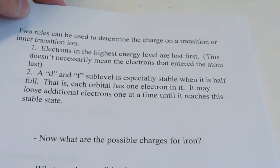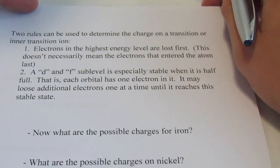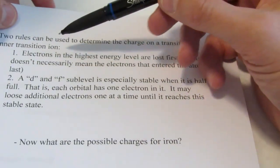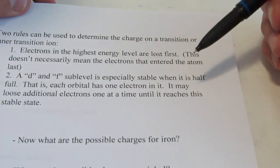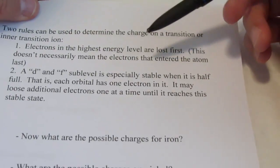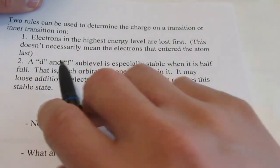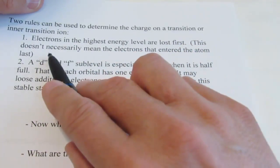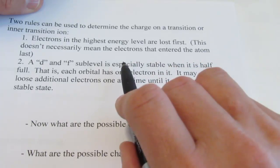Let me give you two rules. Two rules can be used to determine the charge on a transition or inner transition ion. Rule number one is the first one we use: electrons on the highest energy level are lost first, and they lose those both at the same time. Now when I say the highest energy level, this doesn't necessarily mean the electrons that entered the atom last.